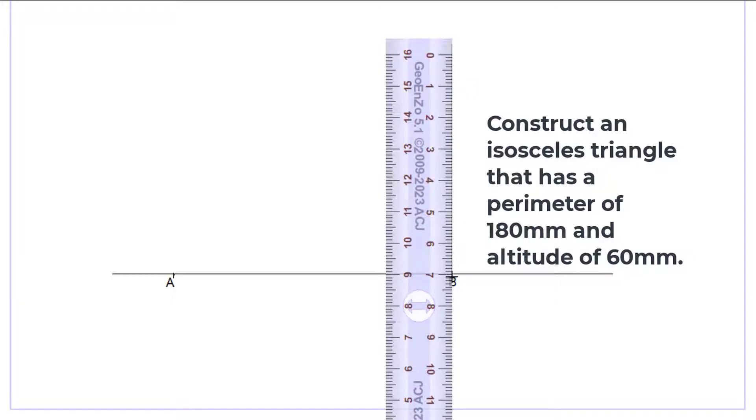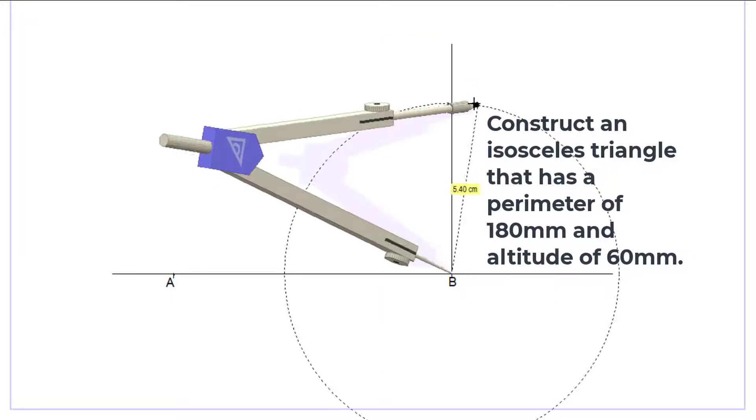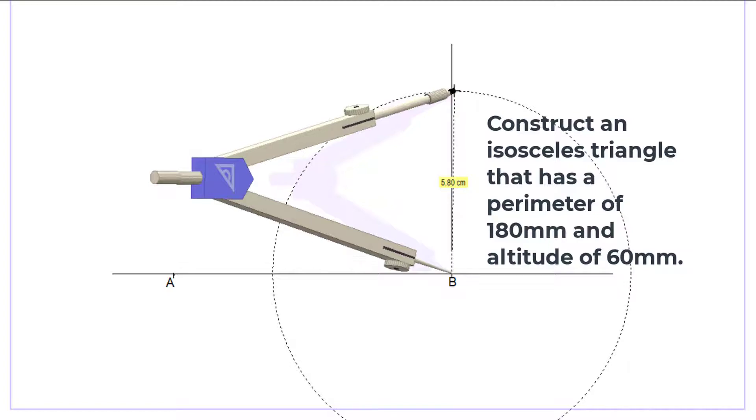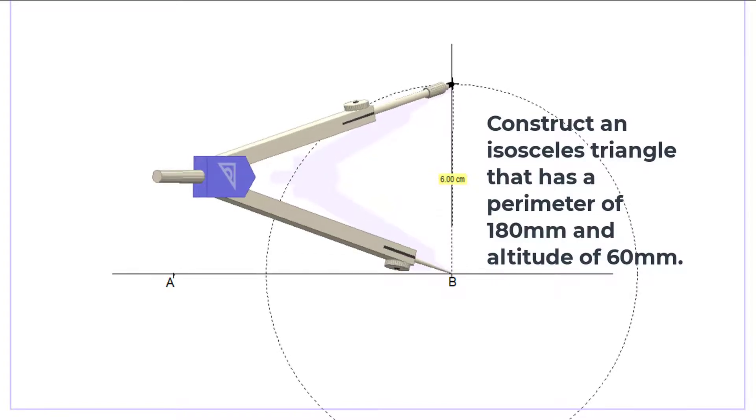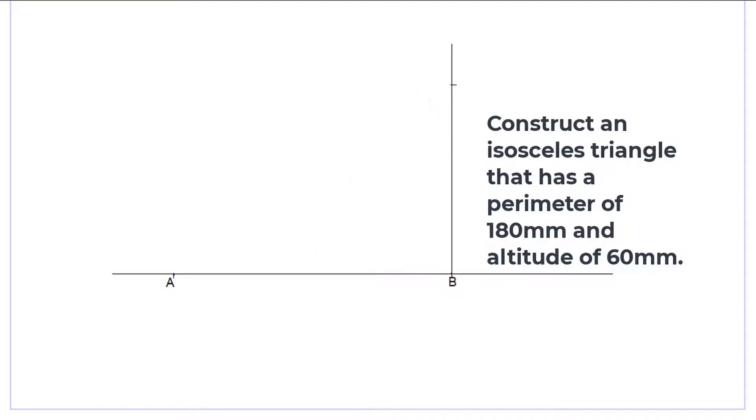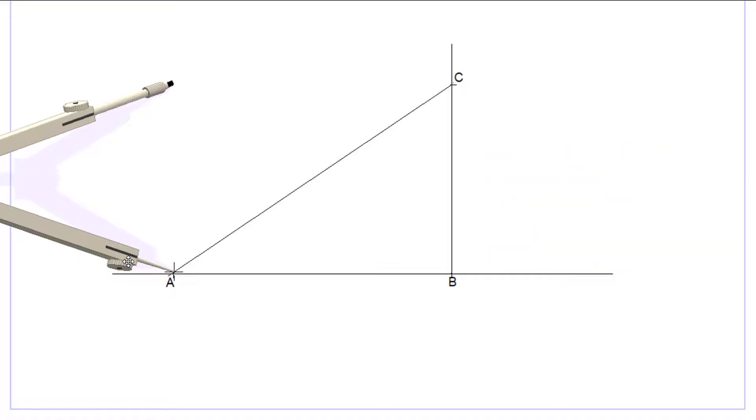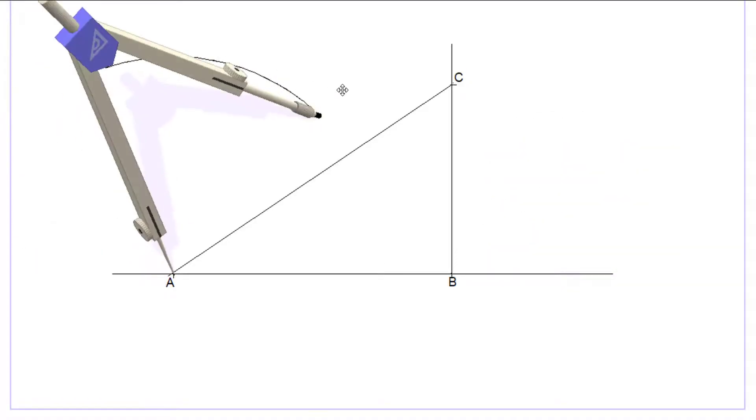After obtaining the distance BC, connect C to A. Now bisect the line AC. Where the bisection meets line AB, we call the point D.